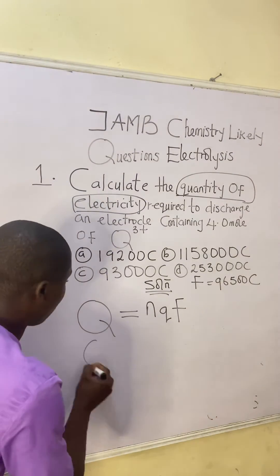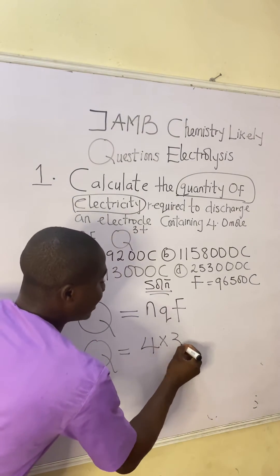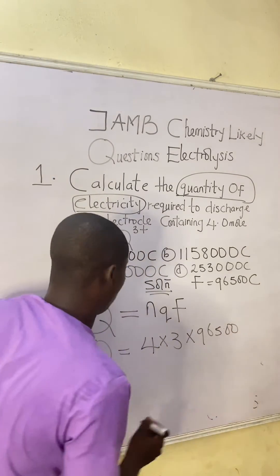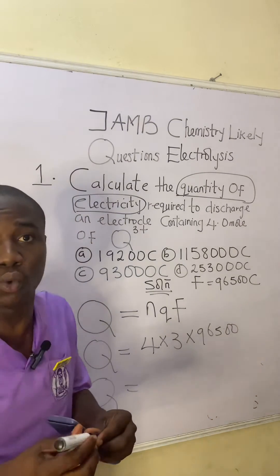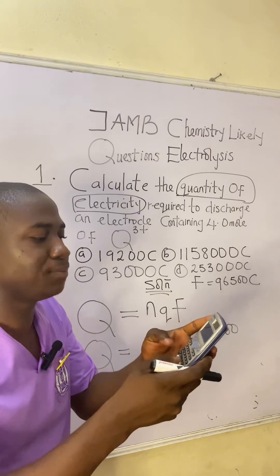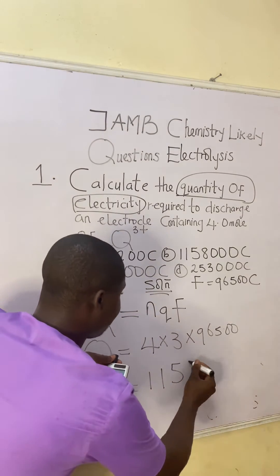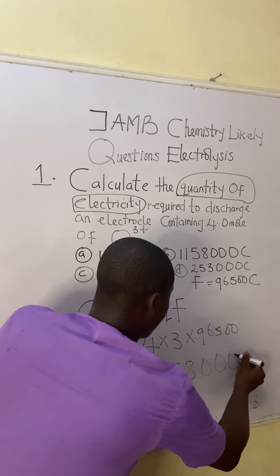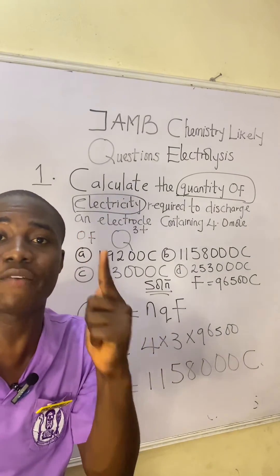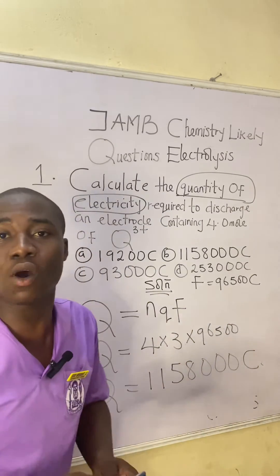Now let's solve together. Q equals n, which is 4 moles, times q, which is 3 (the charge given in the question), times F, which is Faraday's constant 96,500 coulombs. So Q = 4 × 3 × 96,500. Using a calculator, that gives us 1,158,000 coulombs. The unit for quantity of electricity is coulombs, symbolized as C.